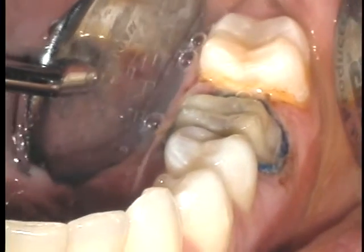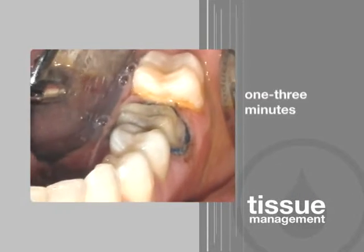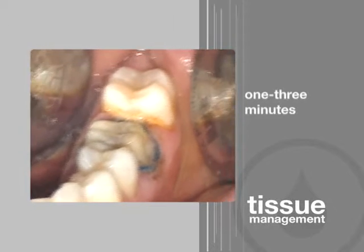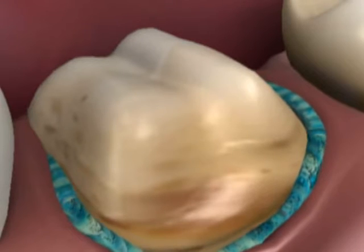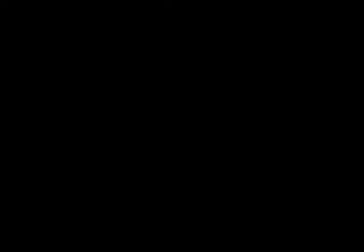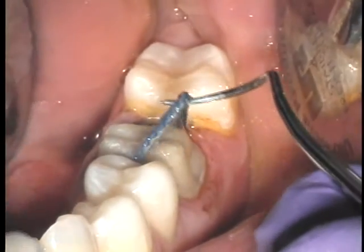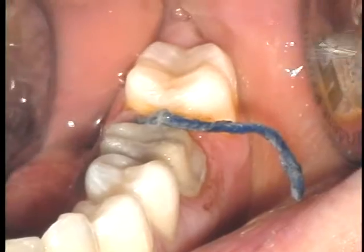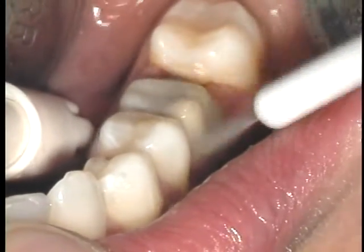After packing, rinse the area. The cords need to be left in place for only one to three minutes, rather than the customary 10 to 15 minutes with other materials. Retraction is rapid because hemostasis has already been achieved. No blood is present to dilute the retraction agent in the cord. Remove the cord and once again clean the area and test for completeness of hemostasis with a firm air-water spray before the impression material is mixed.